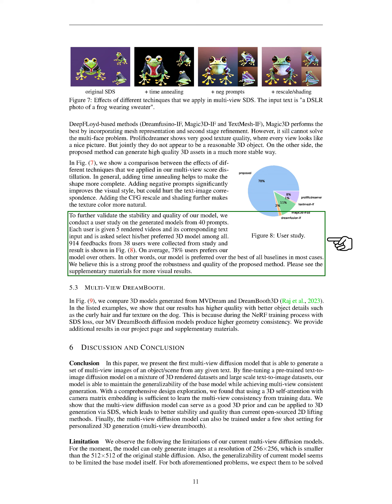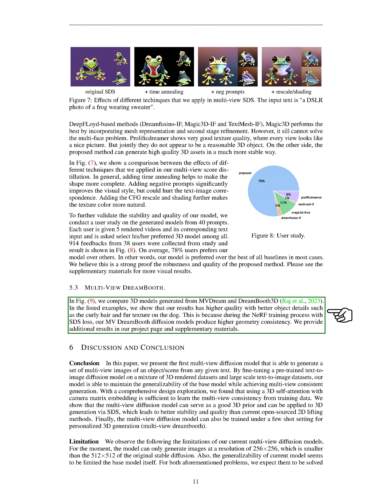In this section, we discuss the multi-view Dreambooth (MV Dreambooth). In the comparison examples provided, the models produced by our method are of superior quality. They exhibit more detailed features, like the intricate curls in hair or the texture of a dog's fur. This is a result of the NeRF training process we use, which incorporates SDS loss. The use of our MV Dreambooth diffusion models during this process ensures a higher level of geometric consistency, which in turn leads to more detailed and higher-quality results. For more examples and further results, please refer to our project page and the supplementary materials.